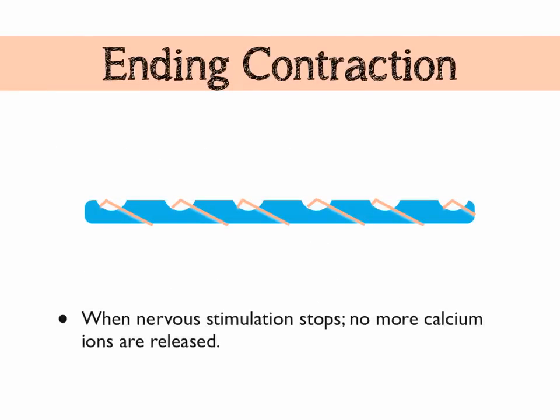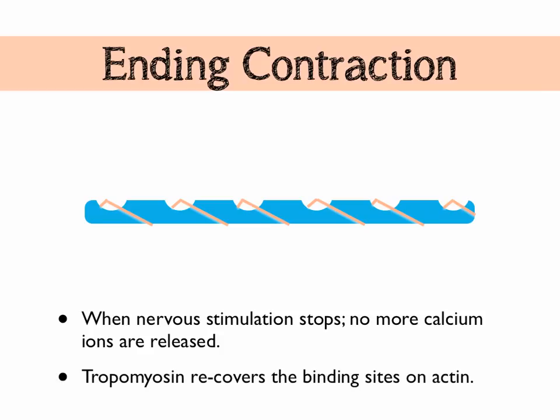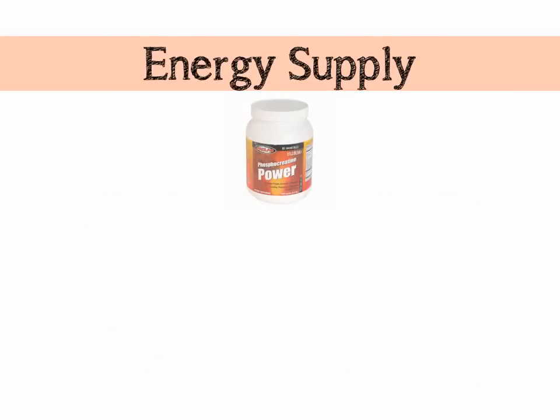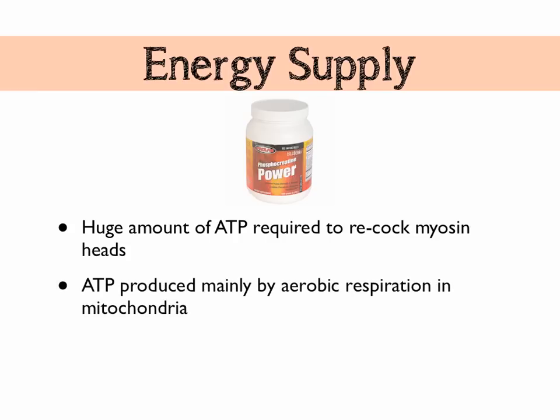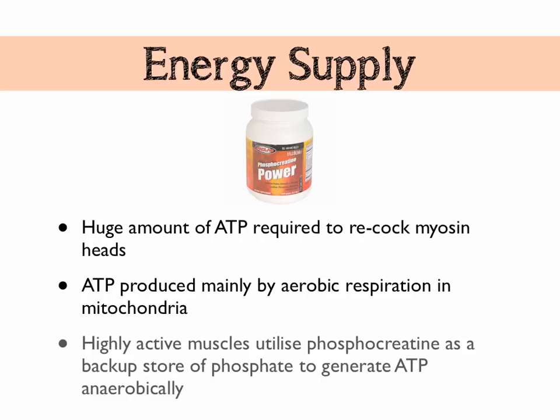To finish muscular contraction, nervous stimulation stops — no more electrical activity comes down the motor neurone to the neuromuscular junctions, no more calcium ions are released, and tropomyosin recovers the binding sites on actin. For re-cocking the myosin heads, you need massive amounts of ATP, normally produced by aerobic respiration in the mitochondria, which requires a large oxygen supply. In really active muscles, you need to generate ATP anaerobically, using an alternative metabolic pathway involving phosphocreatine. Phosphocreatine acts as a backup store of phosphate to regenerate ATP from ADP without the need for oxygen.